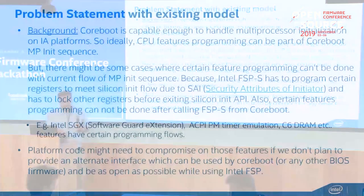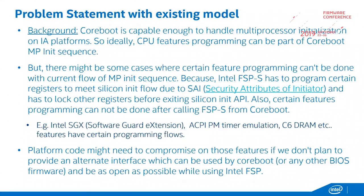Due to SAI, some feature programming can't be done before FSPS and even after FSPS. Within FSPS there's a small window where that programming can be done. Those features are mainly Intel SGX and C6 DRAM — cool features for power saving as well as security. After Canon Lake and onwards, those features have that typical restricted flow that we have to follow.